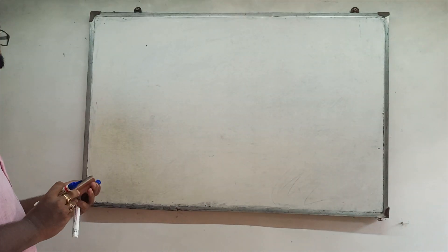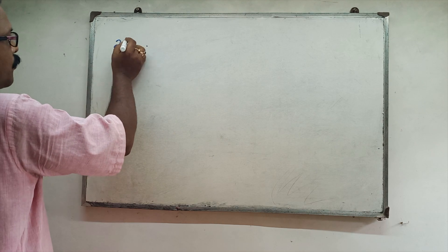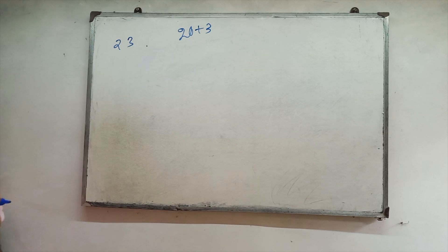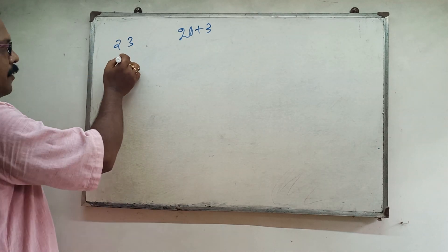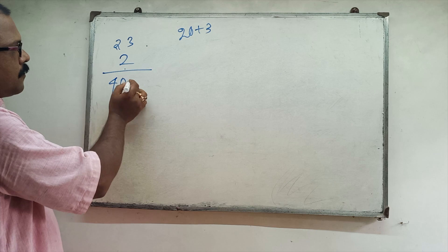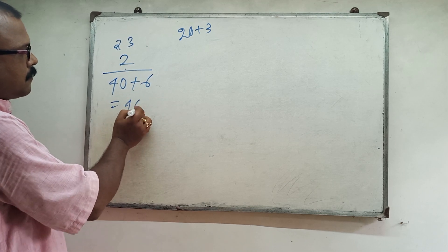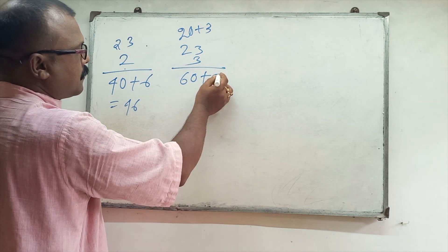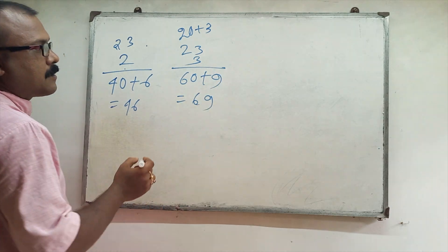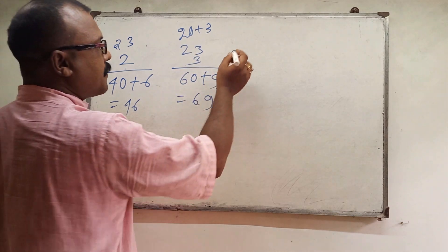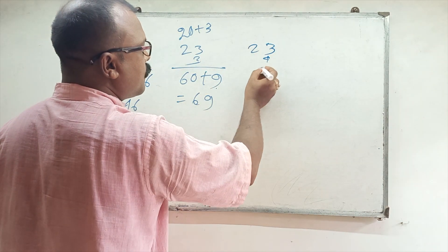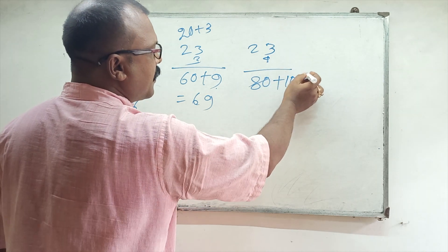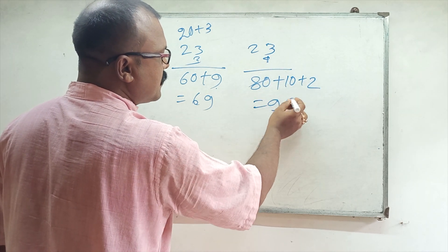So 23: that is 20 plus 3. 23 twos are 46. 23 threes are 69. 23 fours: 20 fours are 80, 3 fours are 12, so 10 plus 2, that is 92.